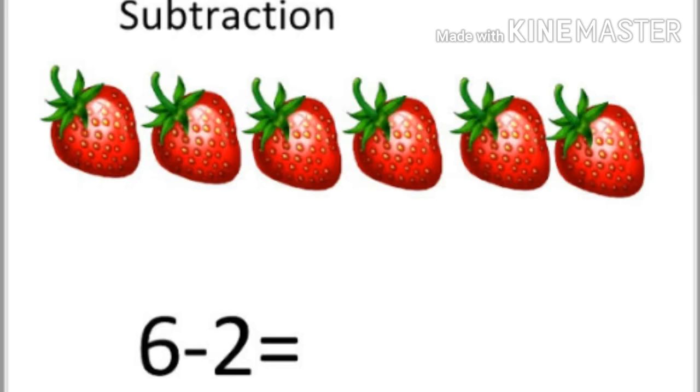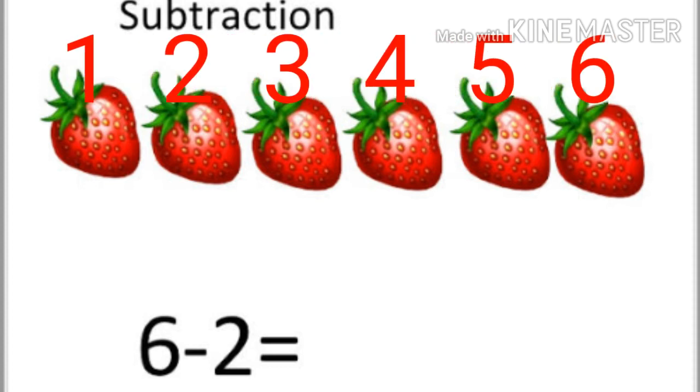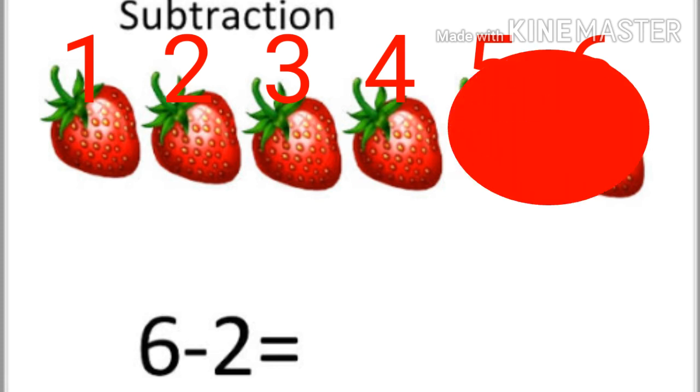See here. How many strawberries are there? Let's count. 1, 2, 3, 4, 5, 6. Total 6 strawberries. Now I eat away 2 strawberries. So remaining, left 4 strawberries there.